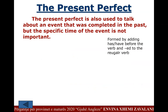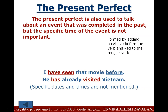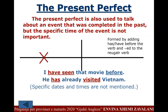The present perfect is also used to talk about an event that was completed in the past, but the specific time of the event is not important. For example: 'I have seen that movie before' — 'have seen' is the present perfect, 'that movie before' means I watched it at some point; it doesn't matter when, what matters is the fact that I've seen it.